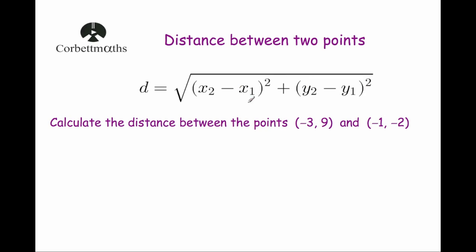In terms of labeling the points, we can call either one of them x1y1 and x2y2. I tend to call the first one I see x1y1 and the second one x2y2. It doesn't matter, because we're going to be squaring them — if we had a negative instead of a positive, when we square we'll just get positive values anyway.